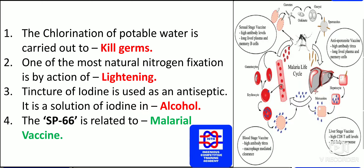SP66 is related to the malarial vaccine. The ELISA test is used for various purposes — ELISA is for AIDS. Now, can you comment: what test is done for the identification of typhoid?